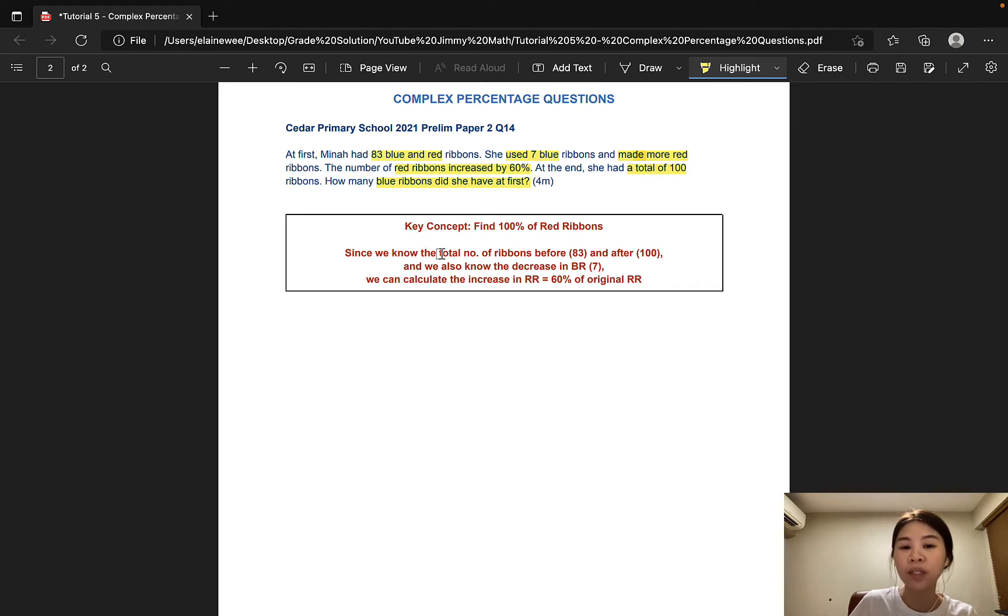Since we know the total number of ribbons before and after, and we also know the decrease in the number of blue ribbons, we are able to calculate the increase in the number of red ribbons. And that mystery number would be 60% of the original number of red ribbons. To better visualize what I'm talking about, let's go ahead and organize the information. And you can see that it is actually not that hard.